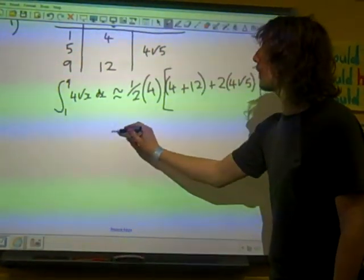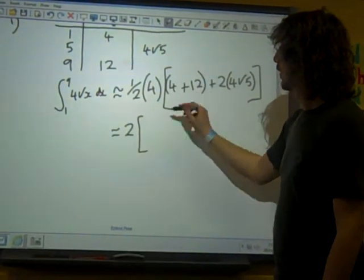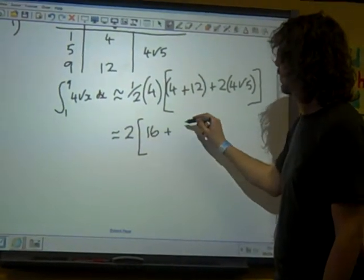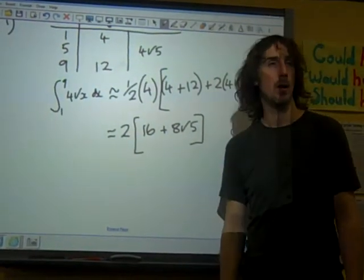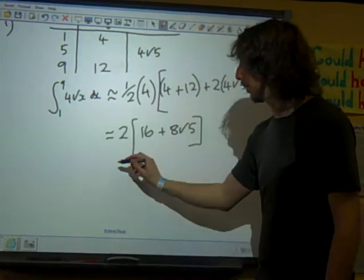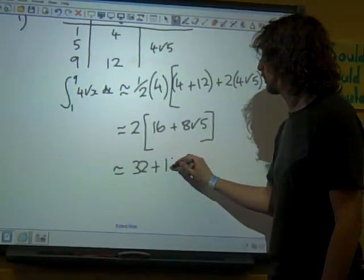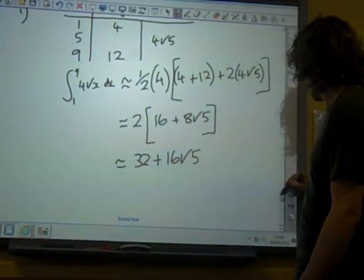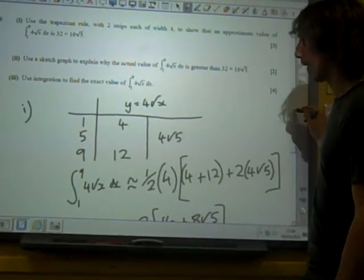So we're going to carefully work out what we've got here. That's two lots of 16 plus 8 root 5. So if we multiply that out, we've got 32 plus 16 root 5. That's what we're meant to show, wasn't it? There we go. Three marks.